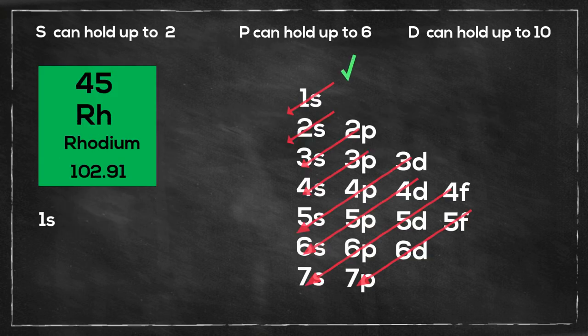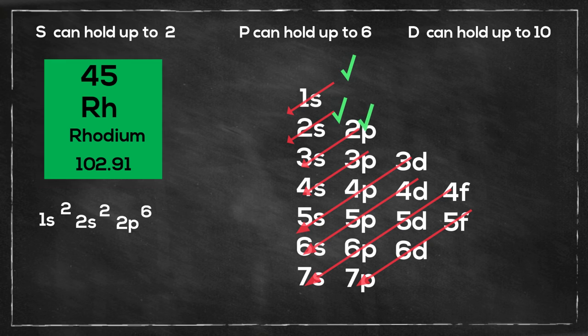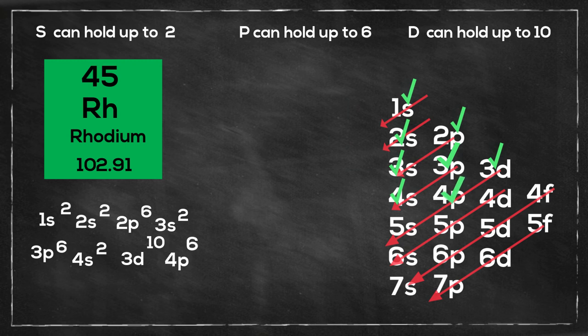So I will have 1s2, then 2s2, then 2p6, then 3s2, then 3p6, then 4s2, then 3d10, then 4p6.